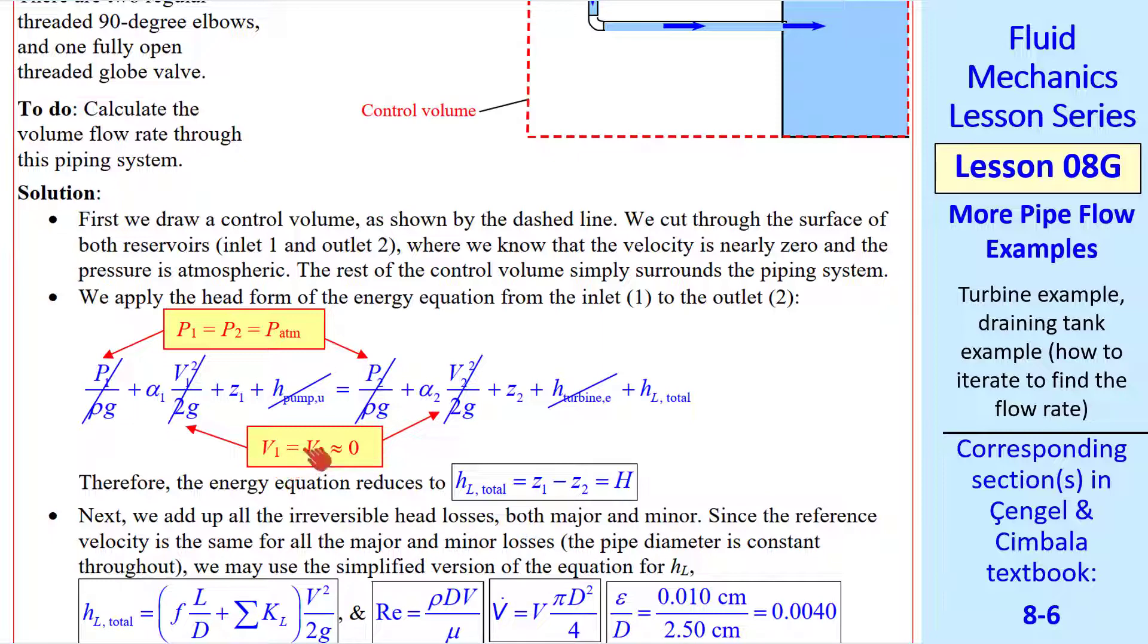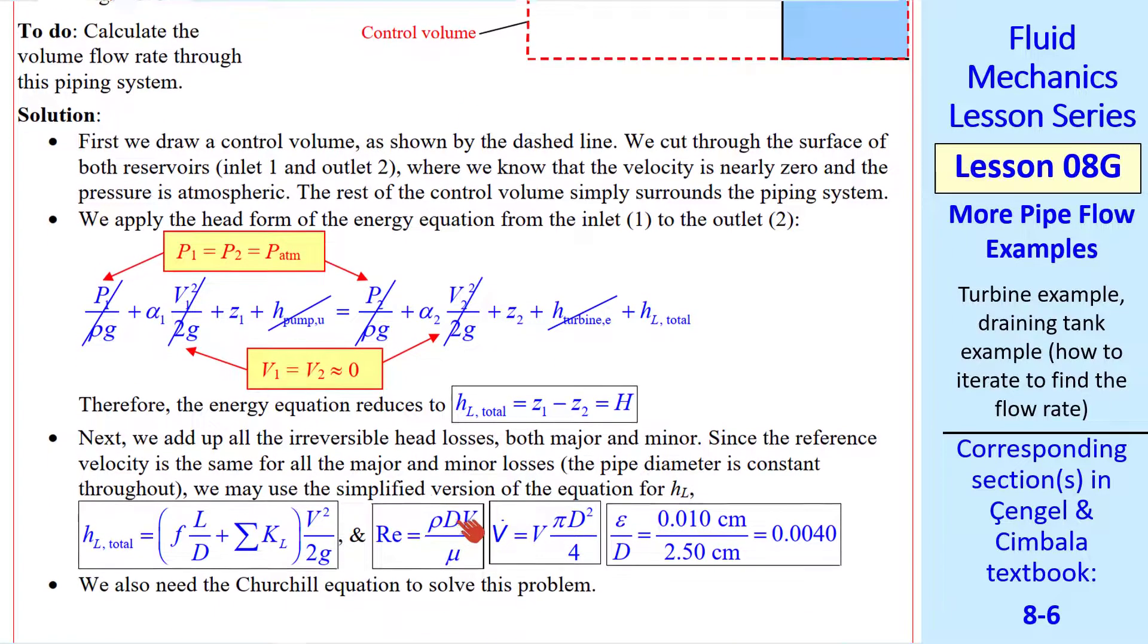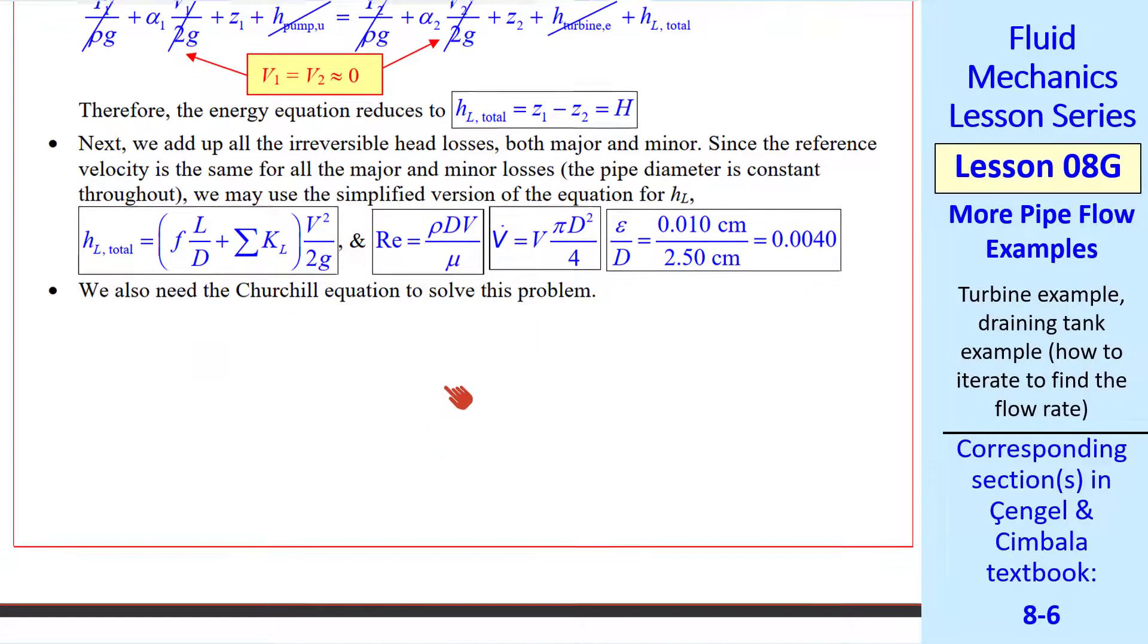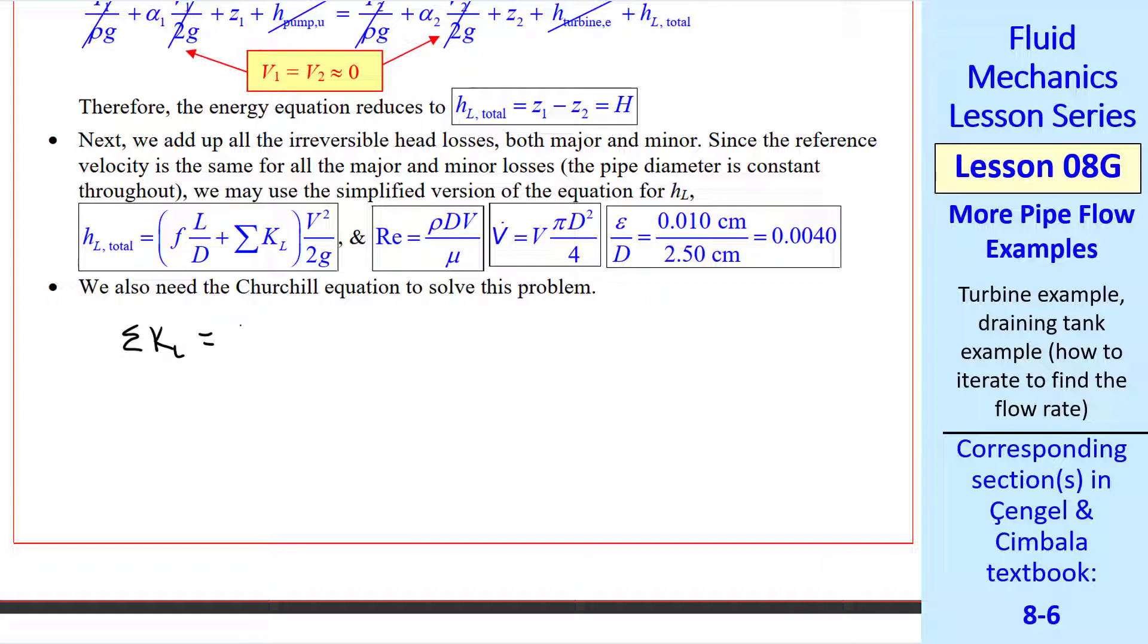This is very similar to the previous problem, except we have no turbine. And these terms drop out for the same reasons as before. So our energy equation reduces to something much simpler. But this turns out to be a much more difficult problem to solve. Since we have one pipe diameter throughout, this equation is again valid. And we have equations for Reynolds number, volume flow rate, and we calculate our epsilon over d. We need one more equation, which is the Churchill equation, so that this problem is mathematically sound, with the same number of equations as unknowns. Again, we sum all the minor losses. Looking these up in the tables, we have a sharp inlet, two 90 degree elbows, a globe valve, and alpha at the exit of the pipe. We get 13.35.